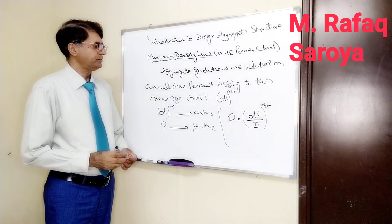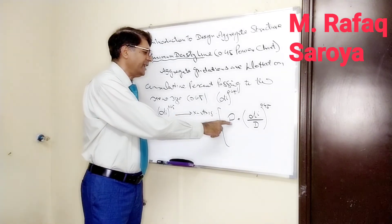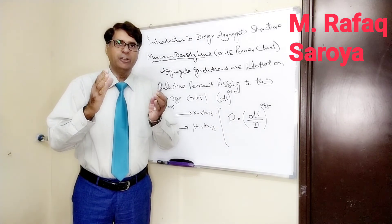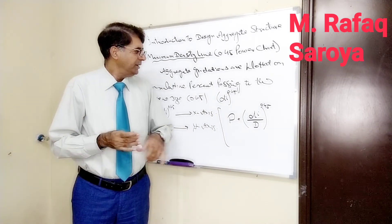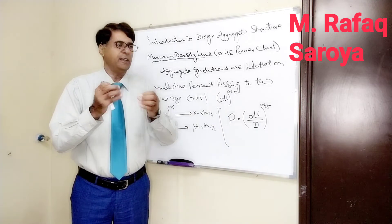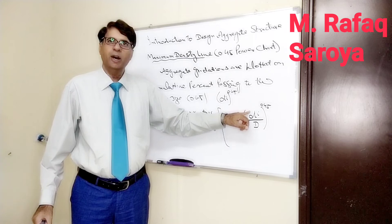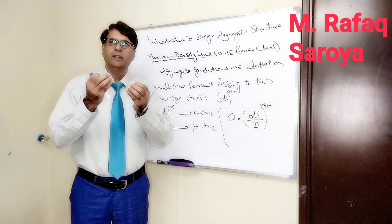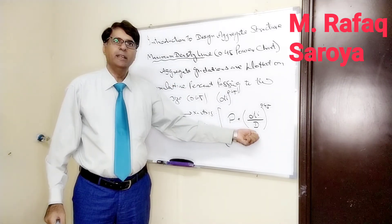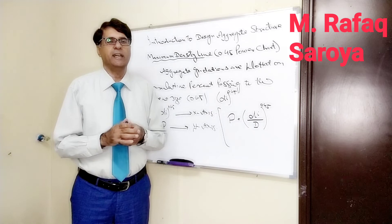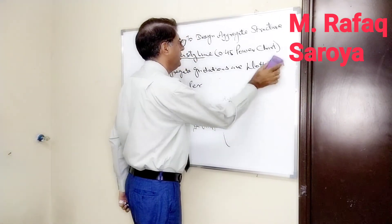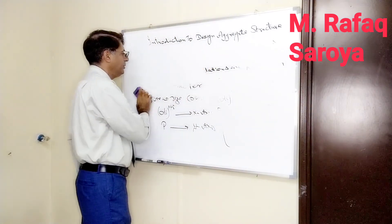Now, P is the cumulative percent passing. Small di represents the sieve opening sizes, which vary from top to bottom. Capital D is the maximum size of the aggregate. So let me make a table for your clear understanding of this concept.